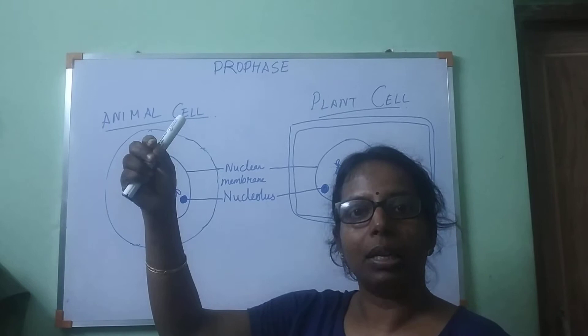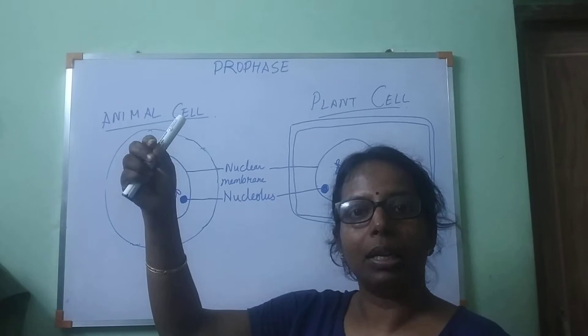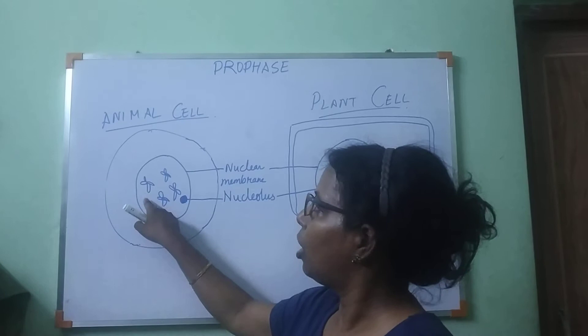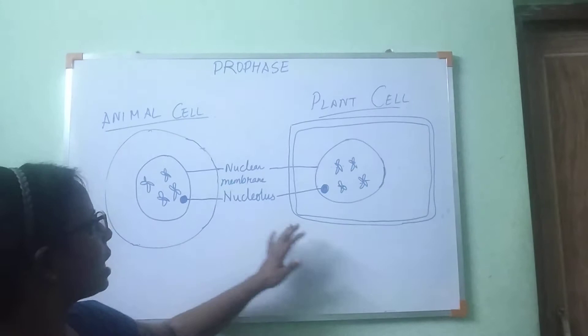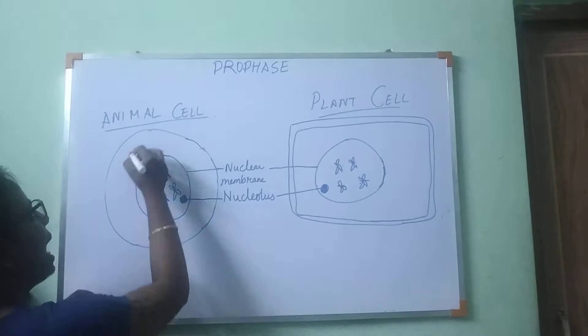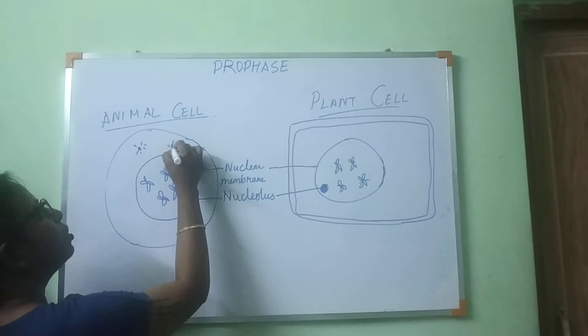The thin chromatin fiber will now become condensed and take the structure of chromosomes. These are chromosomes — this is how the animal cell and plant cell look like. Notice that this is the nuclear membrane, and this is the nucleolus. In animal cells, there are centrioles which start moving towards the opposite side. In plant cells, we don't have centrioles.